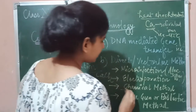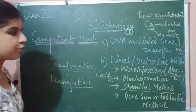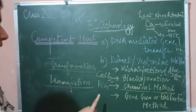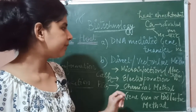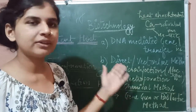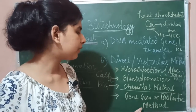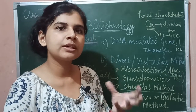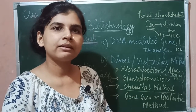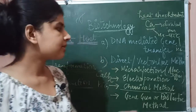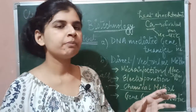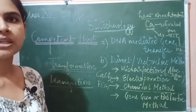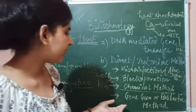Then we have the chemical method, which uses polyethylene glycol (PEG) to facilitate transfer of vector DNA into host cells. After that we have the gene gun method, also called the biolistic method. In this method, our foreign DNA is coated onto tungsten and gold particles, and these particles are then bombarded into the host cell.